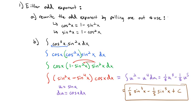Our general strategy, if either one has an odd exponent, is we pull out one of them and then change the other one using the identity 1 minus sine squared or 1 minus cosine squared. That makes it into something we can handle with a basic u substitution.